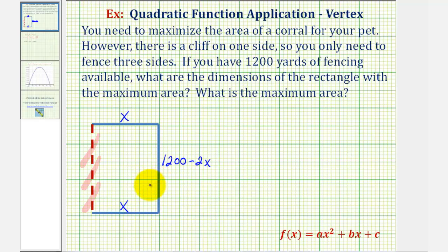And now because the area of a rectangle is equal to length times width, we can say the area of this rectangle would be A equals x times the quantity 1,200 minus 2x.